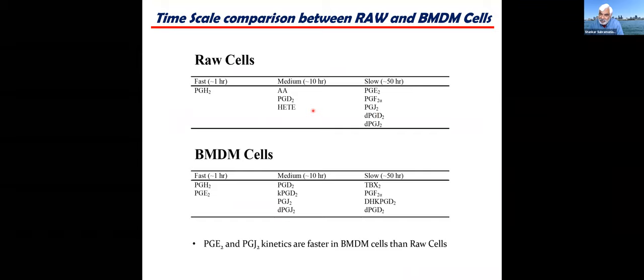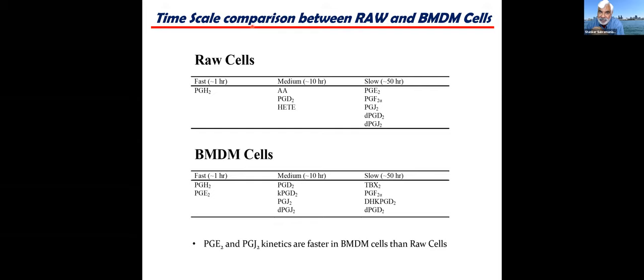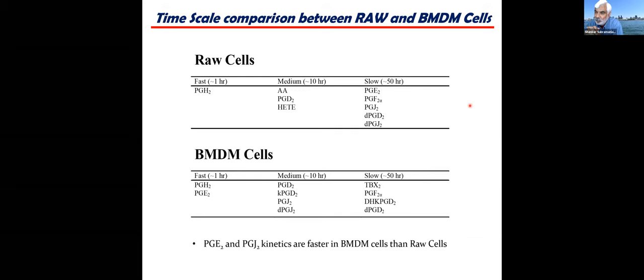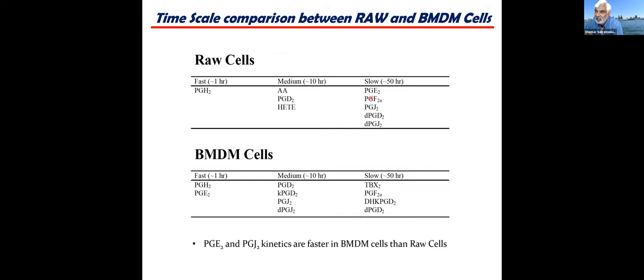We can also do timescale decomposition. In a kinetics systems biology experiment, we look at what happens quickly, what happens medium-term, what happens slowly. For example: PGH2 responds on the fastest timescale; arachidonic acid, PGD2, and HETE on the medium timeframe; and other species on a 50-hour timescale. This gives an idea of when you expect to see metabolic changes in a patient sample — whether treating a diabetes patient with drugs and asking about glucose metabolism, lipid metabolism, or oxidative metabolism — and which timescales you're addressing.